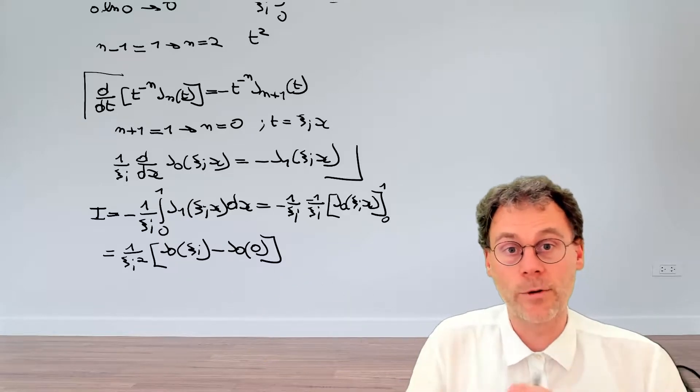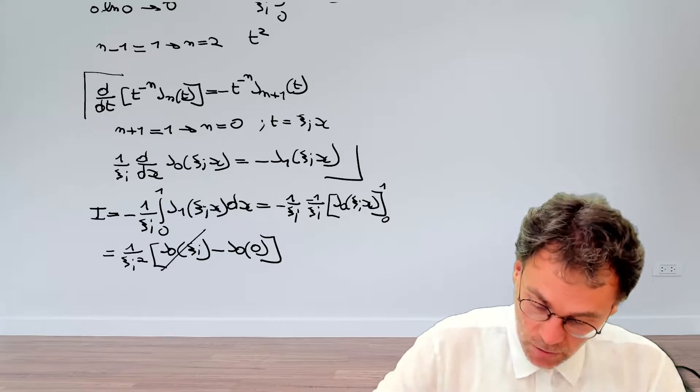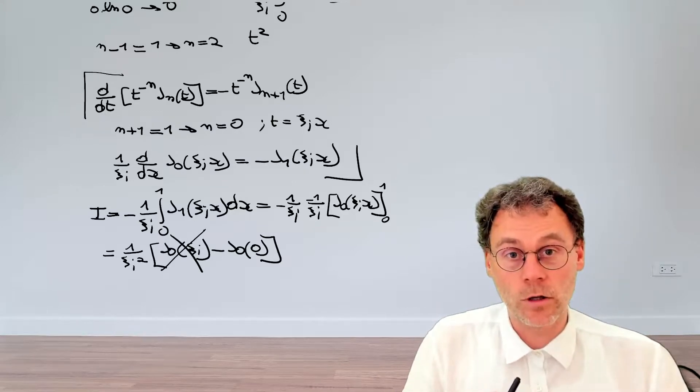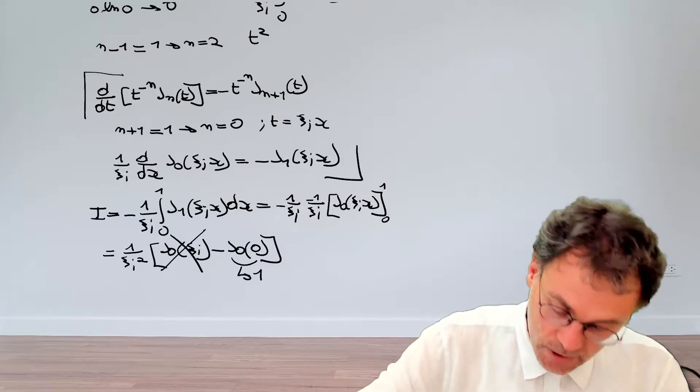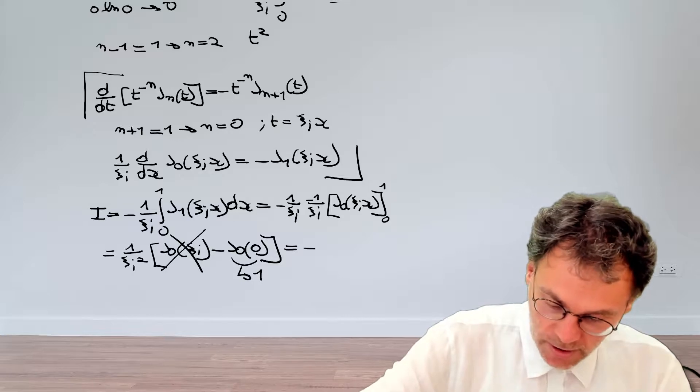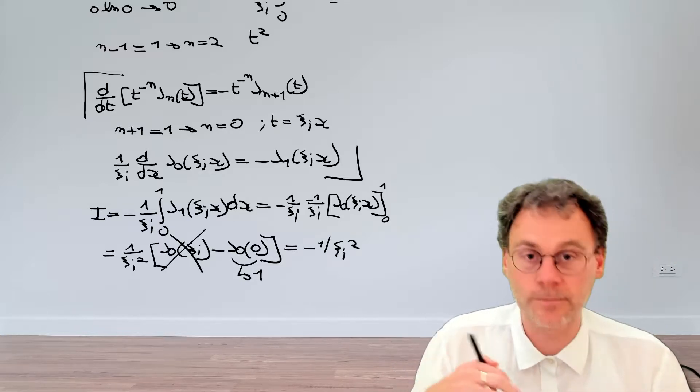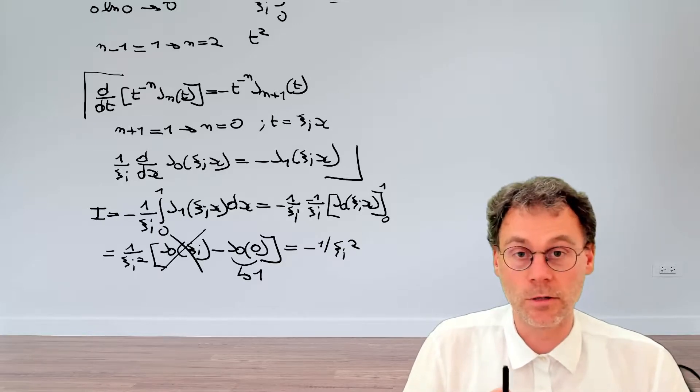Now, do not forget these psi i's. They're not just any random parameters. They're actually zeros of that particular Bessel function. So out goes that term. And also do not forget that we know that j0 of 0 is actually 1. So at the end, we have minus 1 over psi j squared. So we have actually calculated the integral that we were interested in.